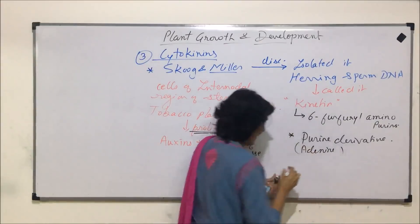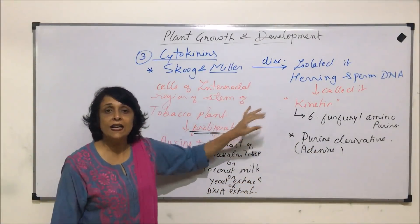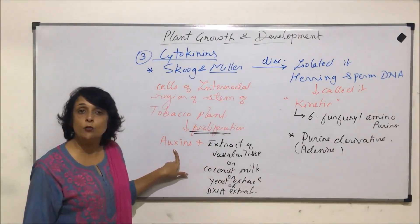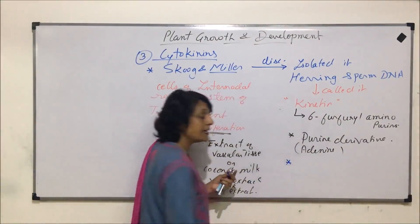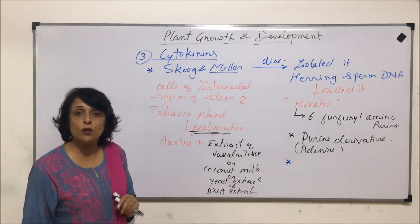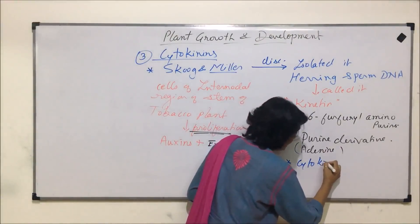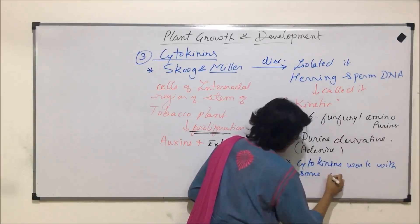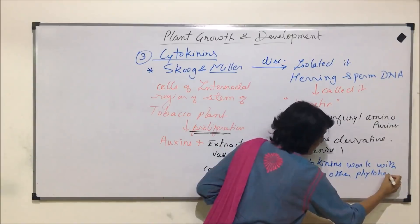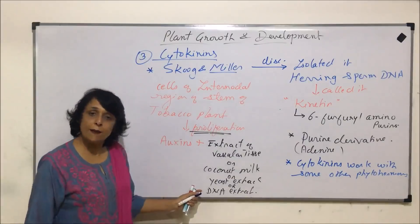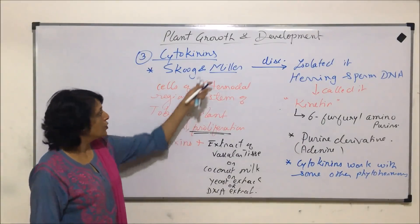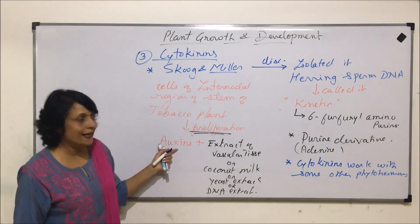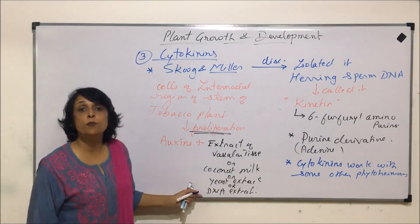Adenine is the purine base from where these kinetins are derived. One important thing is that they were able to bring about this change when present with auxins. Cytokinins do not work alone; they work with some other phytohormones. In this case, it was auxin. The proliferation of cells took place when any of these substances were added with auxin, and these substances were found to contain a chemical that promotes cell division.